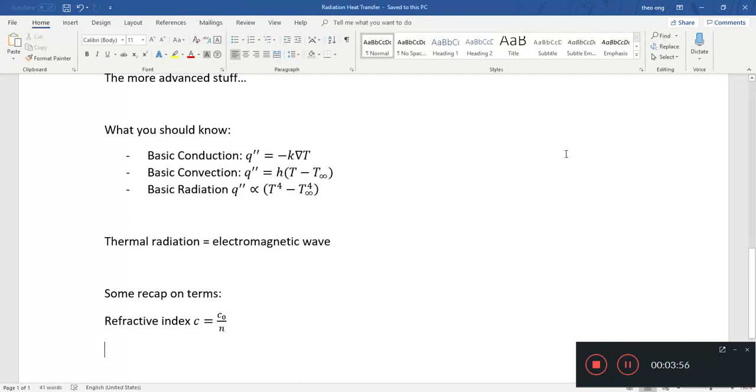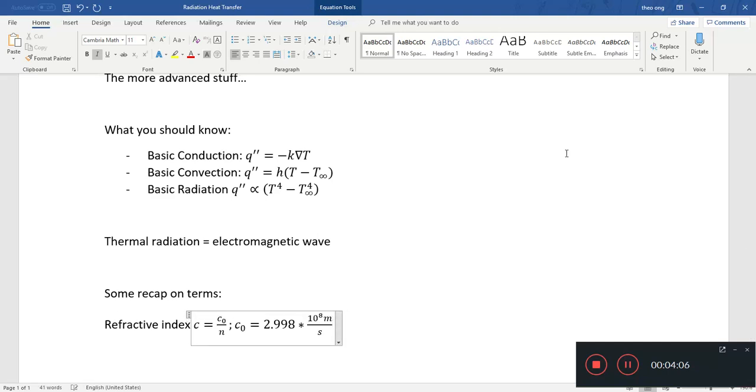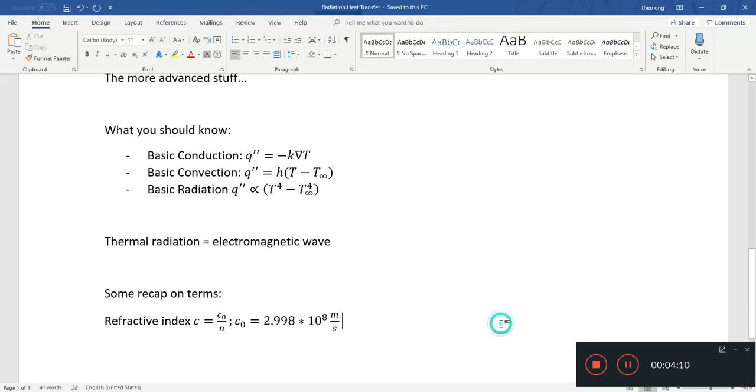According to the book, the formula is c = c₀/n, where n is the refractive index, c₀ is the speed of light in vacuum, 2.998 × 10⁸ meters per second. I'm using alternate equal to quickly come in and out of the equation editor.